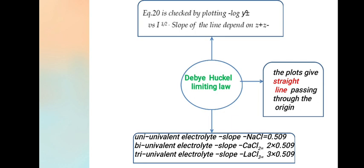Equation 20 is checked by plotting log(γ±) versus √I. Slope of the line depends on Z+Z-. The plot gives a straight line passing through the origin. For uni-univalent electrolyte, the slope is 0.509.